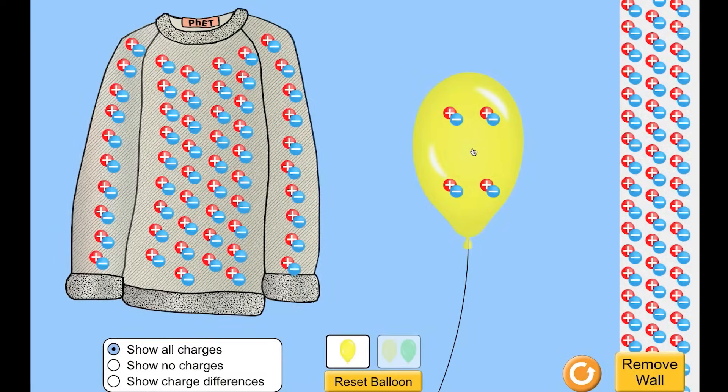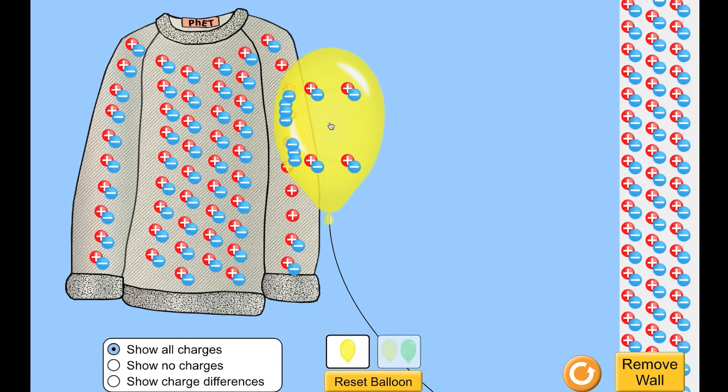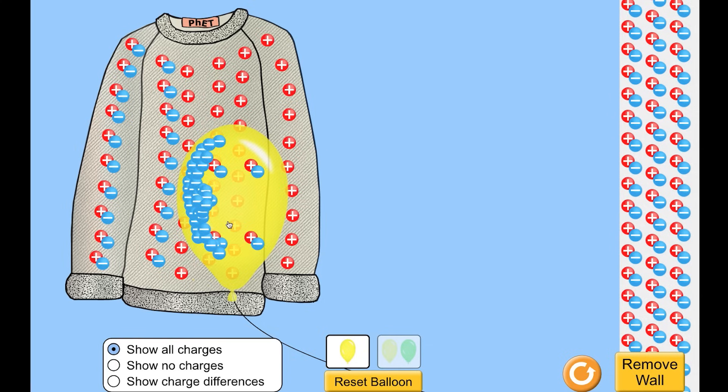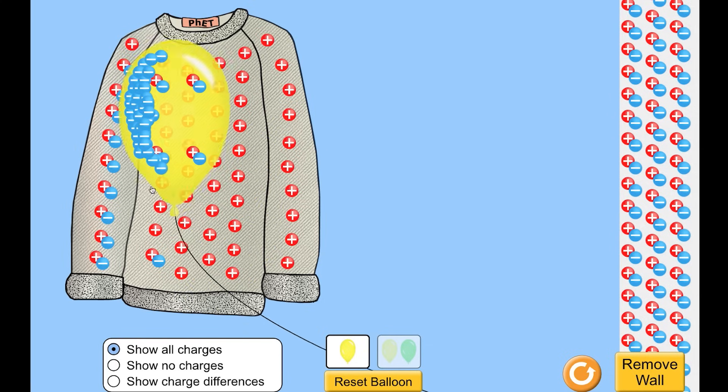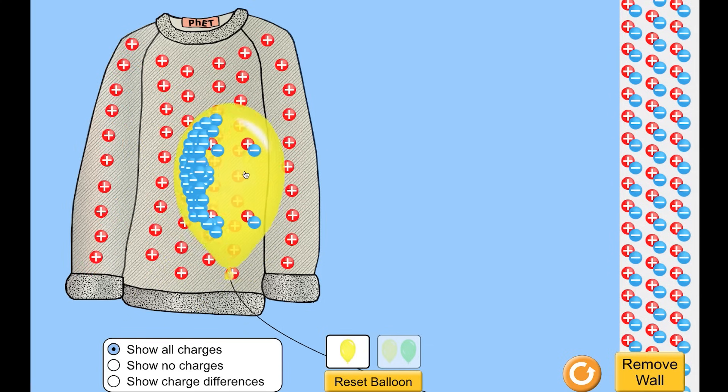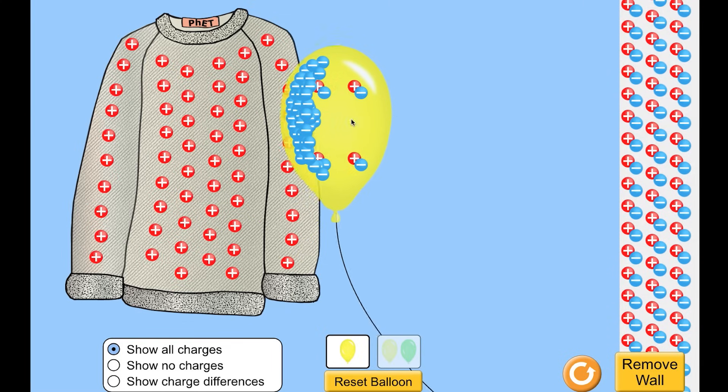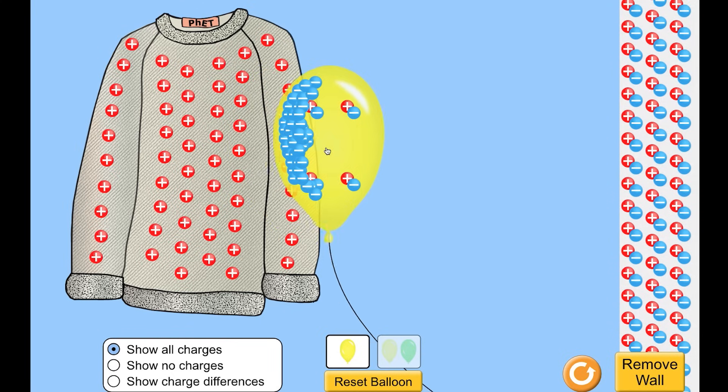When we rub two objects together, sometimes the electrons from one object jump across to the other one, and so the object losing electrons, losing negativity, becomes positive and the one gaining electrons becomes negatively charged, and so these two objects then are attracted to each other because one's positive and one's negative.